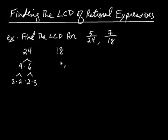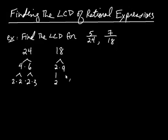For the 18, likewise: 18 is 2 times 9. The 2 is prime so we just bring it down, and 9 is 3 times 3.